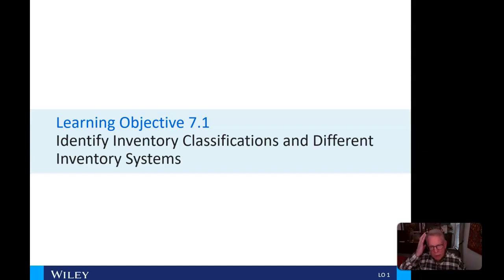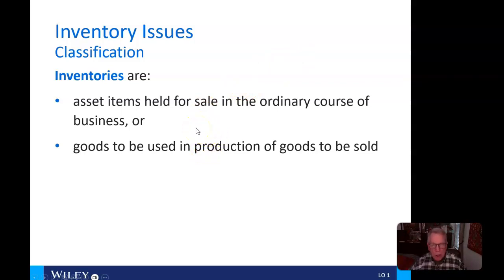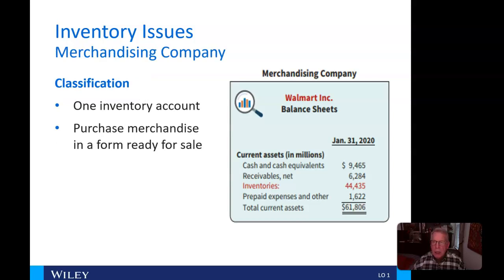Now let's identify inventory classifications and different inventory systems. Inventories are assets held for sale in the ordinary course of business, or they are goods to be used in producing the goods to be sold. For a merchandising company, they only have one inventory account, and that's merchandise inventory.